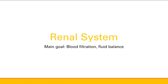So the renal system. The main function of the renal system is blood filtration and fluid balance. Blood filtration means getting rid of all that waste and other things you don't want in your blood — things like nitrogenous waste. And then fluid balance means making sure that you have just the right amount of fluid: good blood pressure, good perfusion of all your vessels, but you're not too volume overloaded, not filled with edema and completely bloated. You're just right.